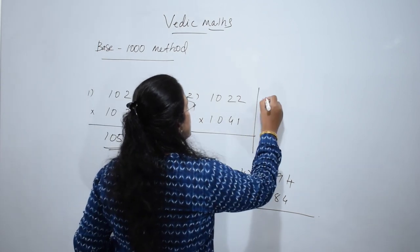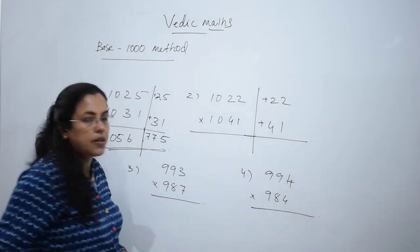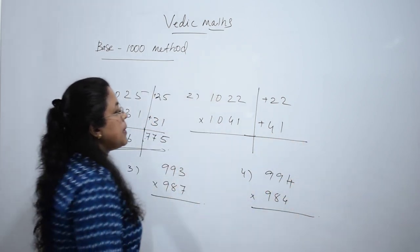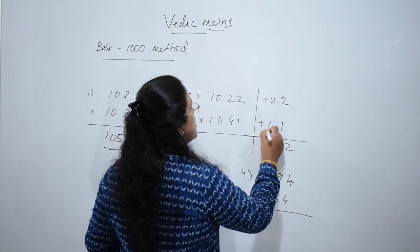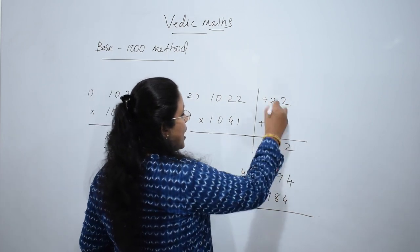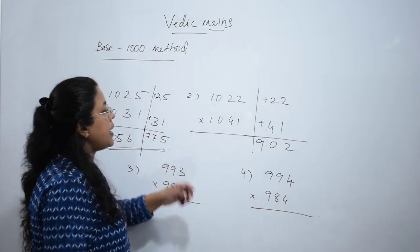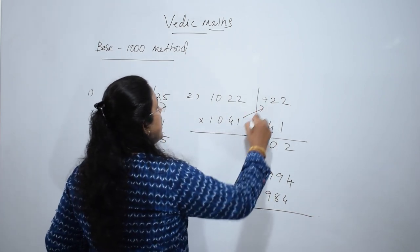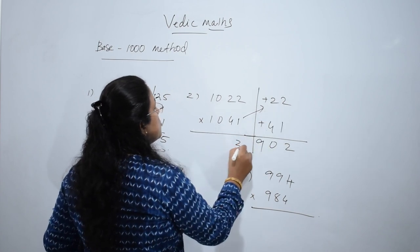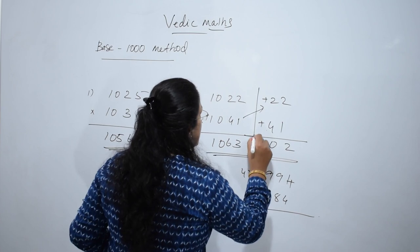Look at this second one. This is 22 greater than 1000, and 41 greater than 1000. First step: multiply the two. 2 times 1 is 2, 4 times 2 is 8 plus 1, 4 times 2 is 8 plus 2 is 10, carry over 1, 4 times 2 is 8 plus 1 is 9, so 902. Add diagonally: 2 plus 1 is 3, 4 plus 2 is 6, so 1063902.